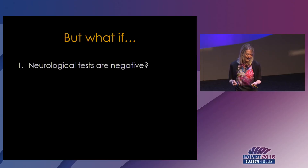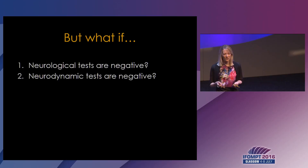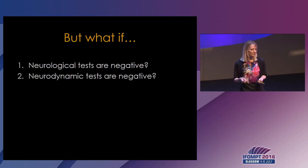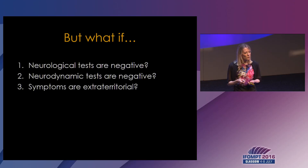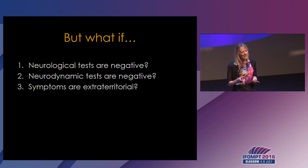The second question: what if a neurodynamic test is negative in a patient where I believe there is an entrapment neuropathy? Does that then exclude such a problem? And most importantly, what happens if patients have symptoms that do not follow the anatomical, dermatomal, or territorial pattern — but instead have widespread symptoms? Does that mean they don't have an entrapment neuropathy?